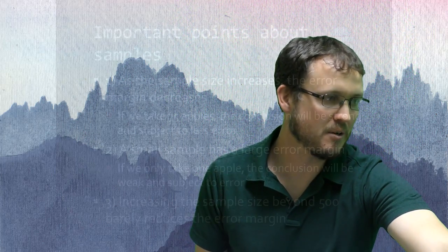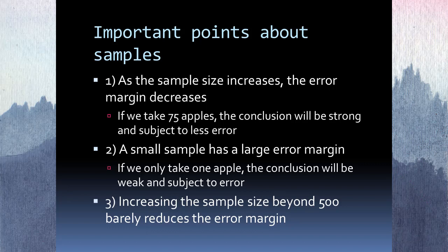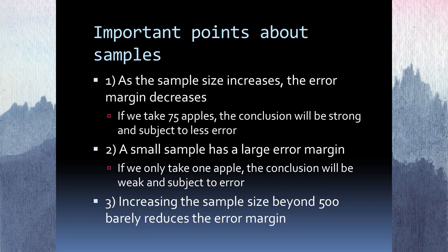A couple more points about samples. First, the bigger the sample you take, the less the error margin — the error margin being how likely you are to be wrong. If I take 75 apples out of a barrel of 100, I'm less likely to be wrong than if I took 70. The more evidence you have, the bigger the sample, the less likely your conclusion will be wrong. This is why scientists try to take as big and robust a sample as possible.